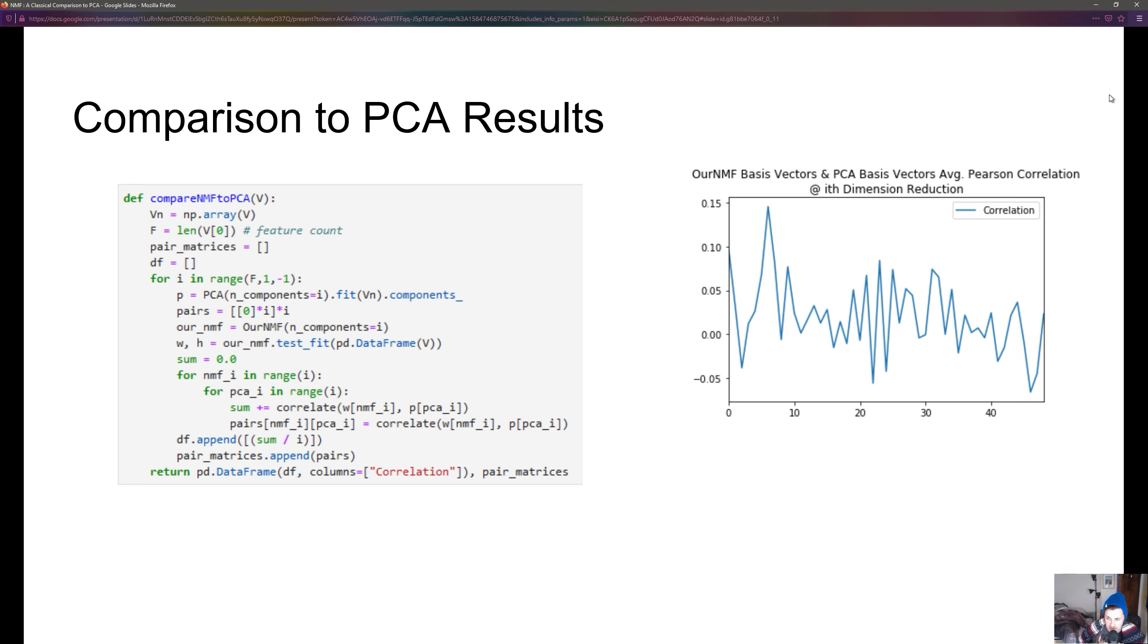What this basically tells us is that the basis vectors for PCA and NMF are completely uncorrelated. The correlation values go up and down negative and positive which means the algorithms are completely different in terms of how they're calculating basis vectors to project the original values on. We can conclude that our NMF is very different than PCA.